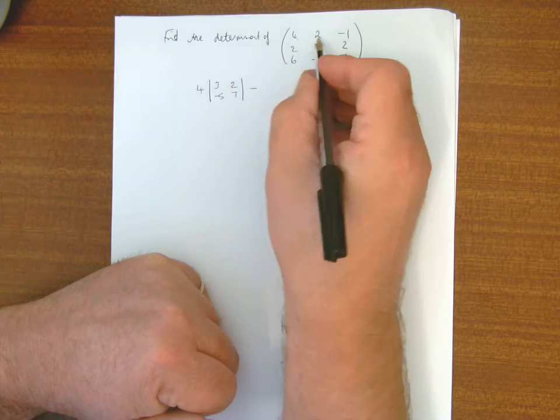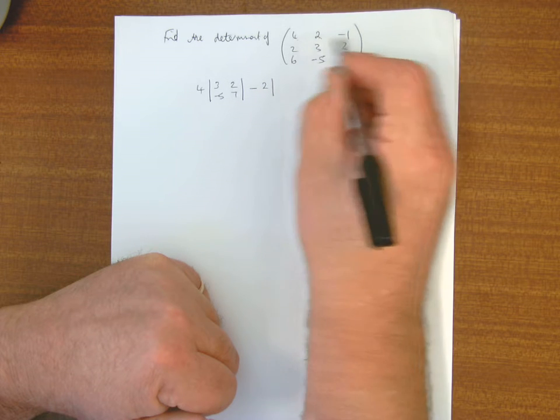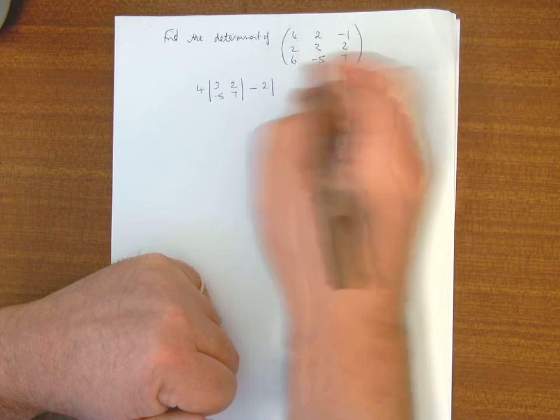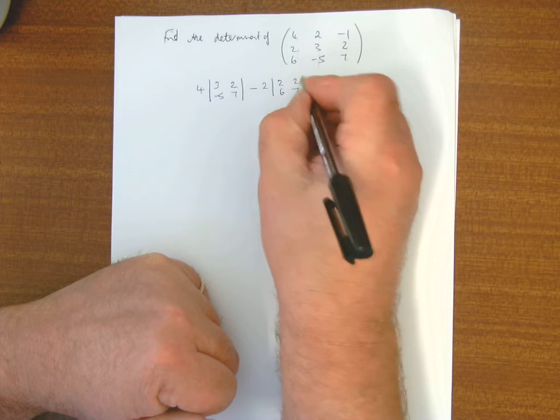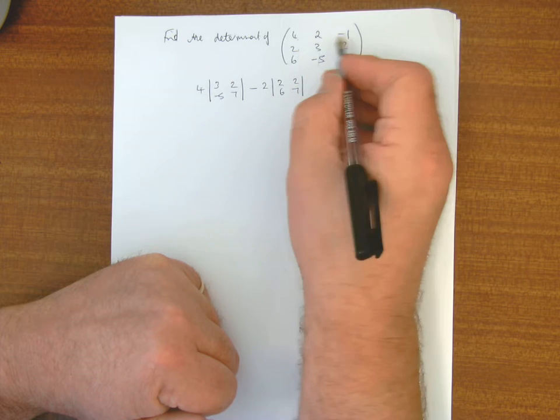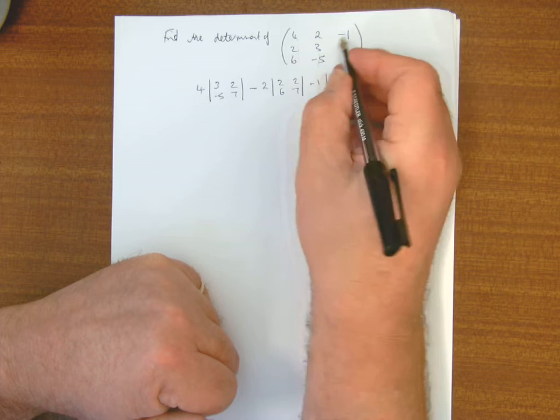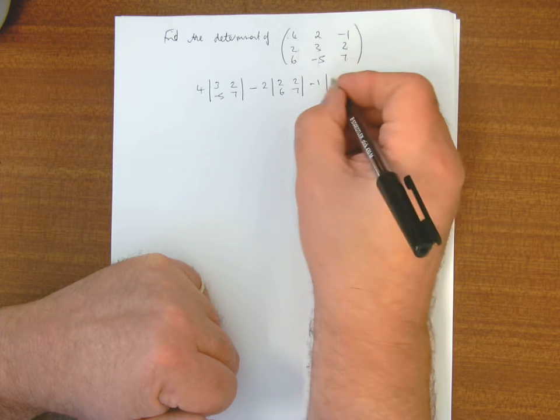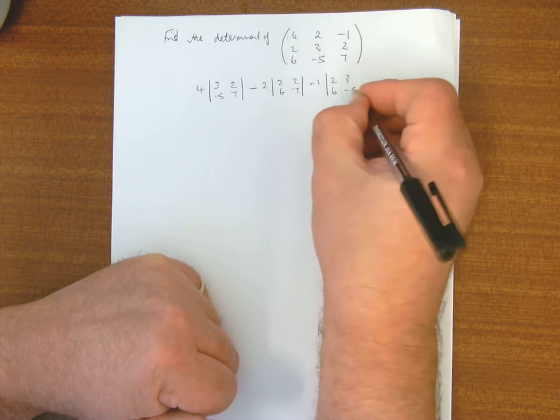Take away 2, T-shape, 2, 6, 2, 7, and plus 3, which is minus 1, block out that row, block out that column, 2, 3, 6, minus 5.